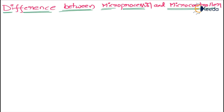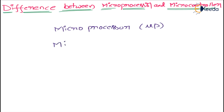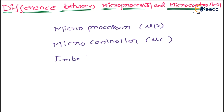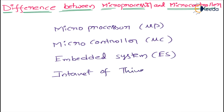Now coming to today's class — the difference between microprocessor and microcontroller. First, let's know the link between different subjects. The first subject is microprocessor, represented by µP. Next is microcontroller, represented by µC. Then embedded systems, represented by ES. Then Internet of Things, that is IoT. So the learning path is: microprocessor → microcontroller → embedded systems → IoT.